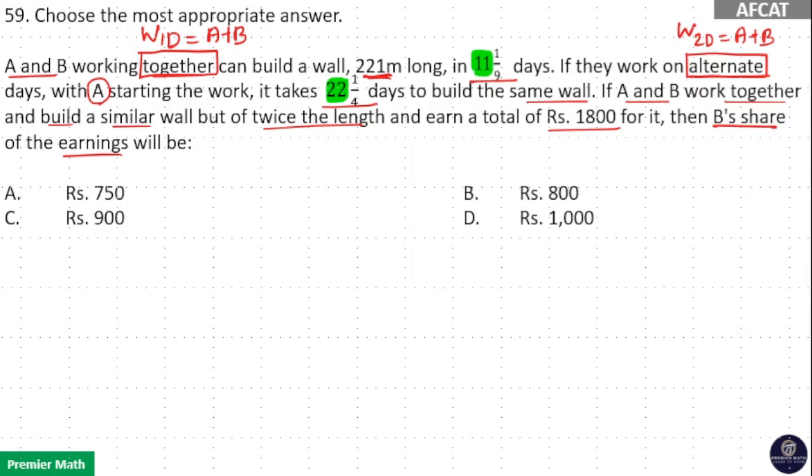That means the remaining is 1/9 days work and 1/4 day work. So work completed by A plus B in 1/9 days equals work completed by A in 1/4 days.